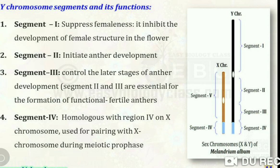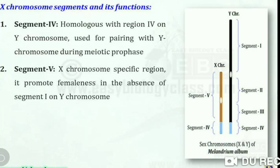Segment four on the X chromosome is homologous with segment four on the Y chromosome and is used for pairing with the Y chromosome during the meiotic process. Segment five is an X chromosome-specific region. It promotes femaleness in the absence of segment one on the Y chromosome. When segment one is absent from the Y chromosome, segment five on the X chromosome promotes the development of female structures.